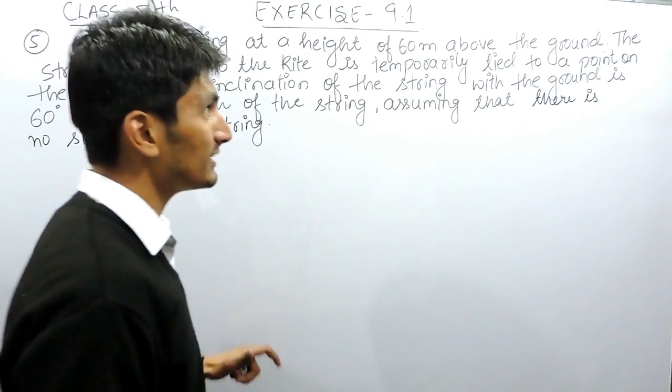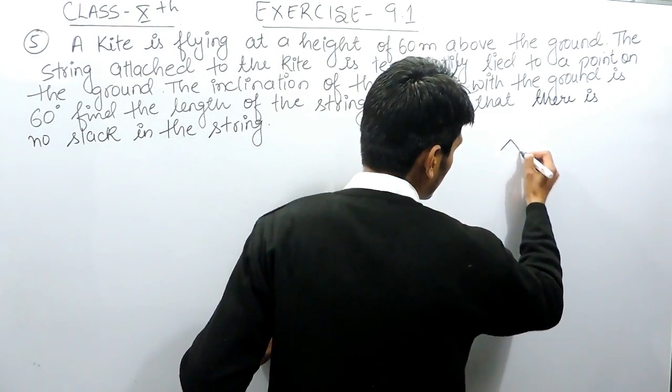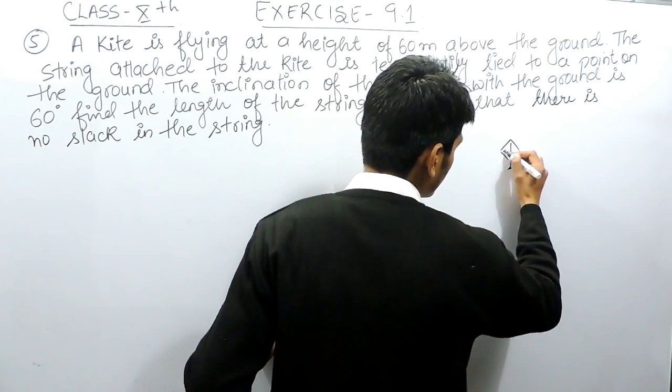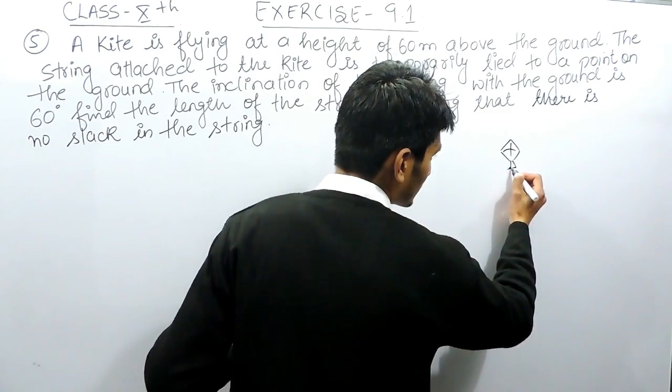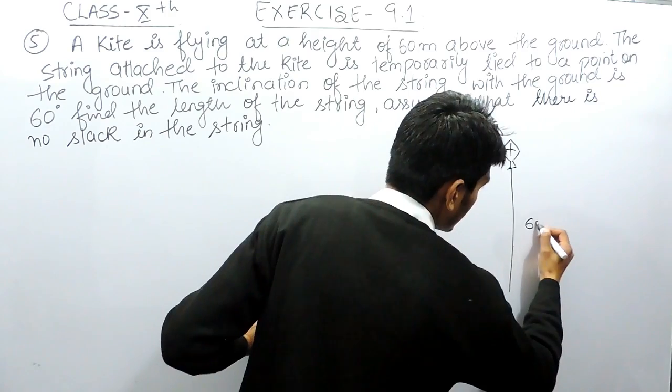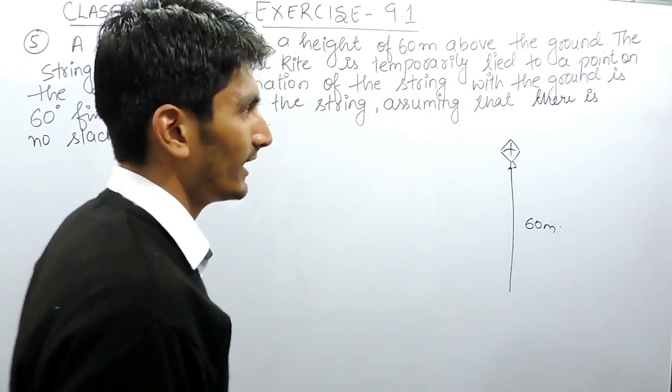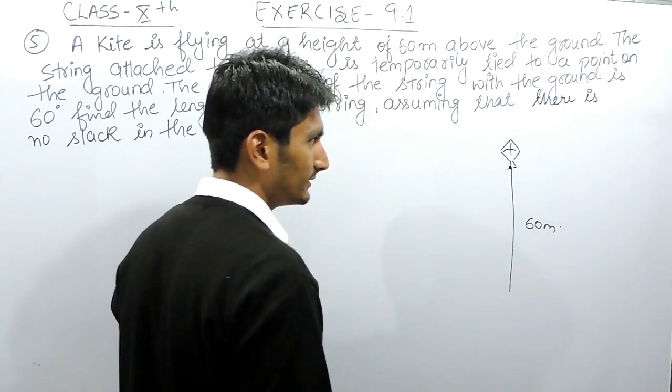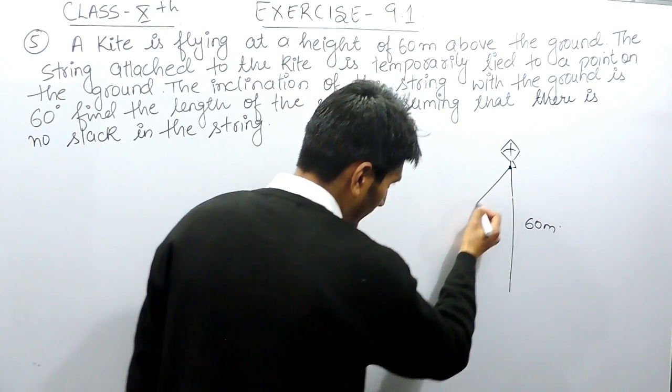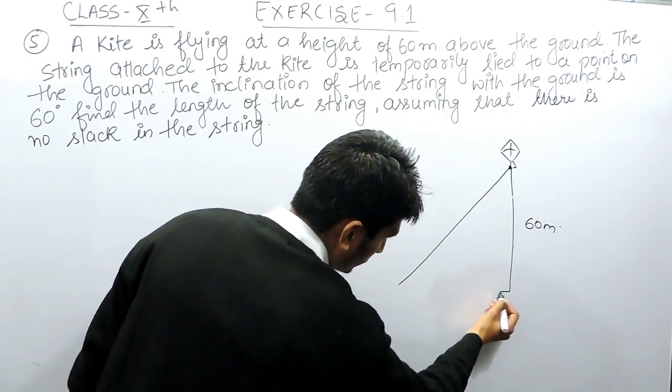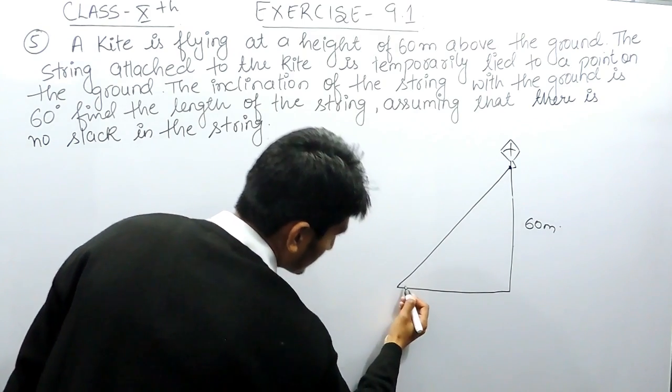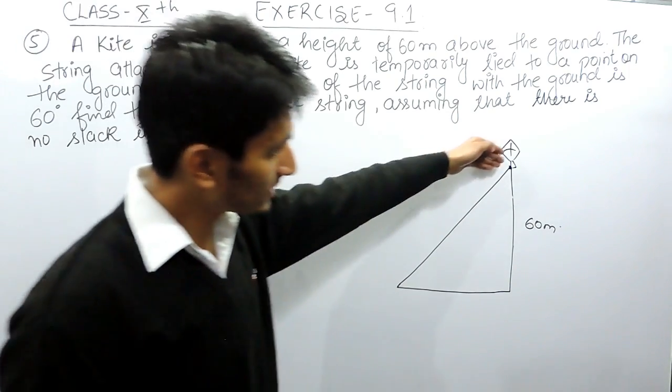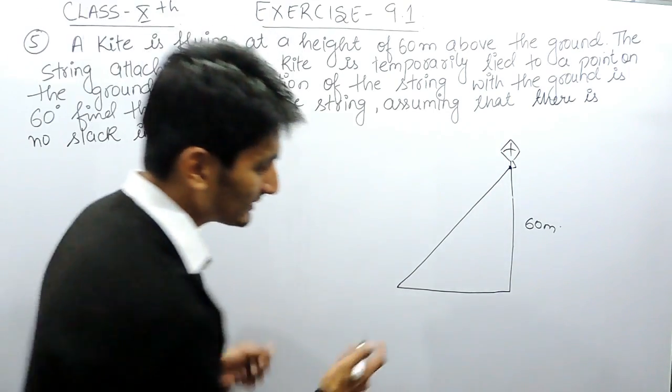It is given that a kite is flying at a height of 60 meters above the ground. This is the kite, and the height of this kite from the ground is 60 meters. A string is attached to this kite and it is temporarily tied with the ground, and this string is inclined at 60 degrees.